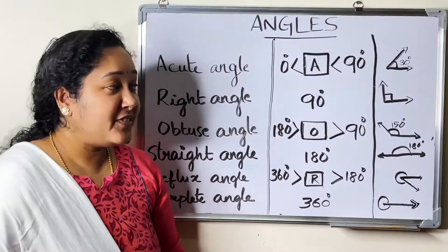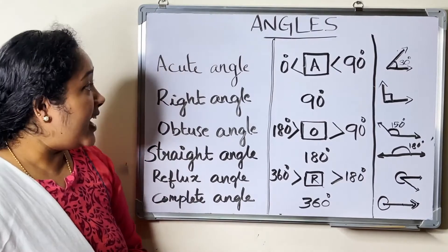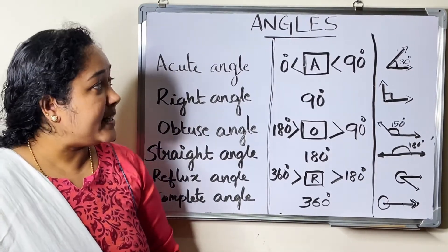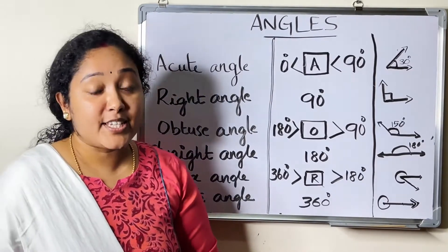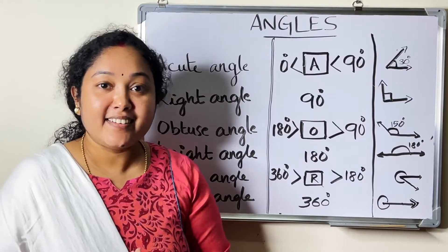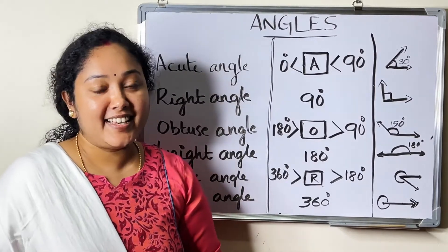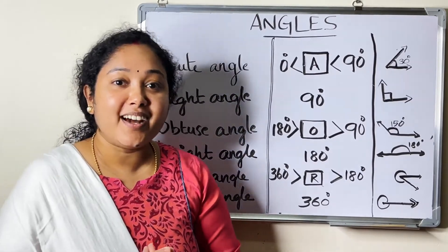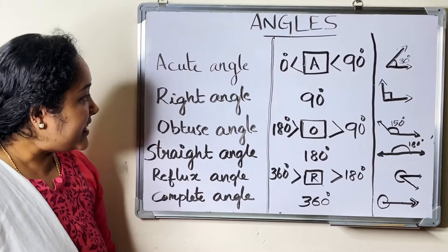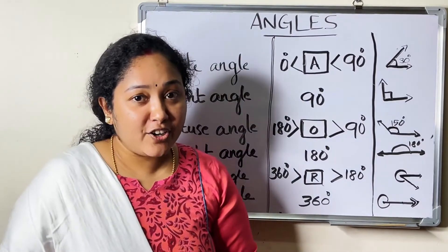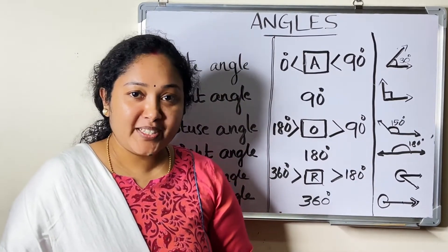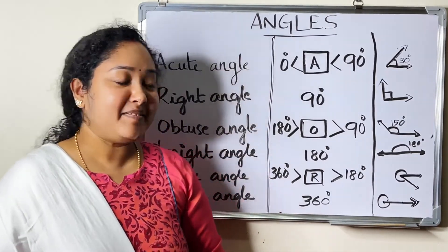The first one is acute angle. An angle greater than 0 degrees and less than 90 degrees is called an acute angle. Right angle: an angle of 90 degrees is called a right angle.